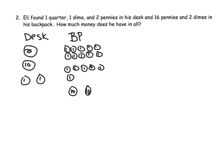First thing we have to do is figure out how much money he has in all. The first thing we've got to do is add. So let's figure out how much money does he have in his desk? Well, he has 25, 35, 36, 37. So he has 37 cents in his desk.